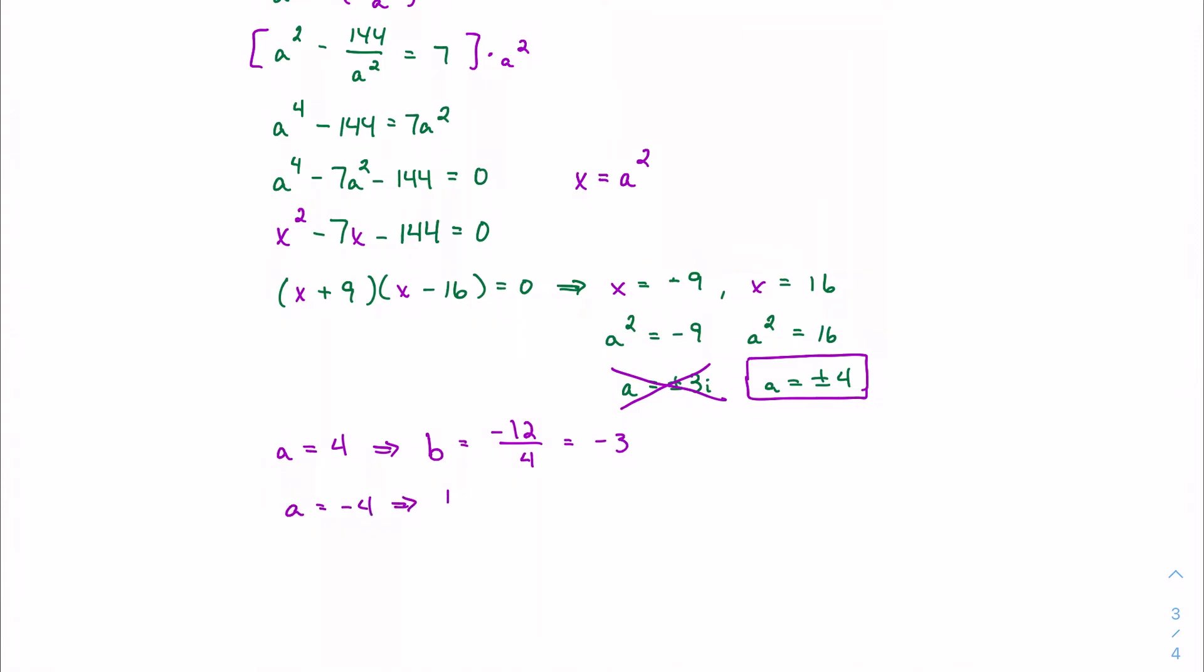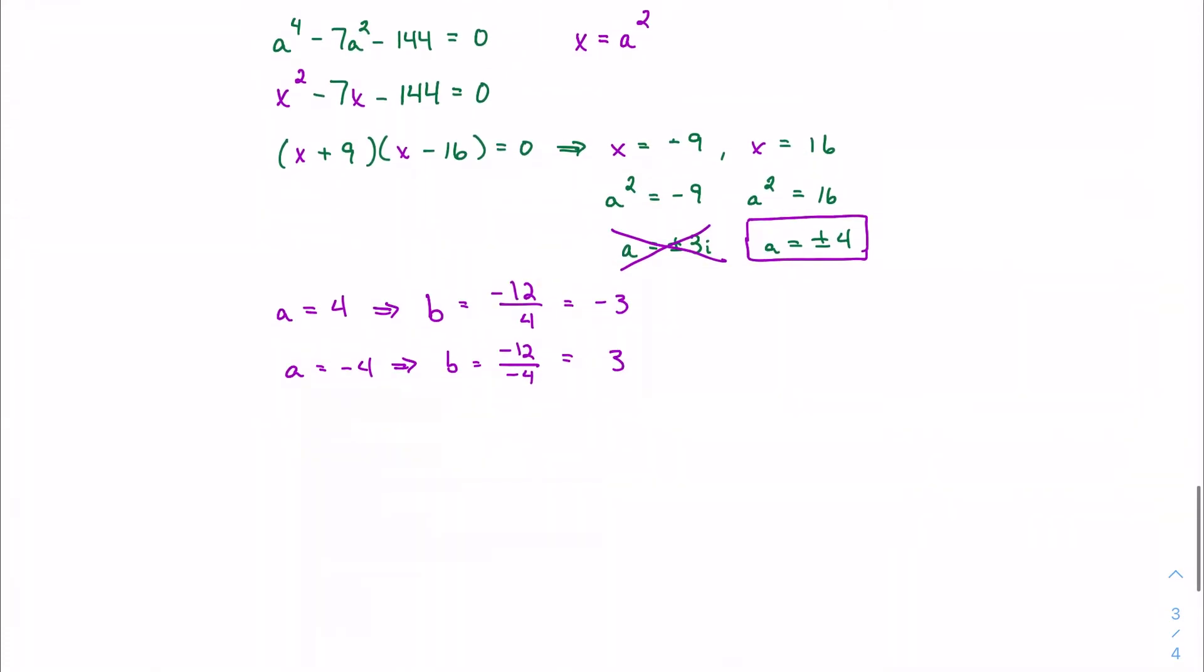Negative 12 over 4, which is negative 3. And if a is negative 4, b is negative 12 over negative 4, I get positive 3. And so my two complex numbers that are solutions are 4 minus 3i and negative 4 plus 3i.